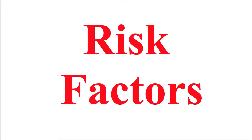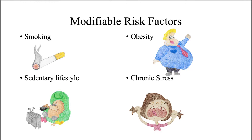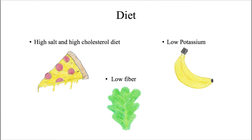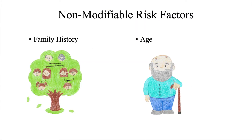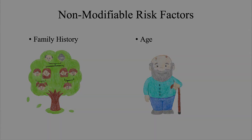Modifiable risk factors include smoking, sedentary lifestyle, obesity, chronic stress, and diet. More specifically, diets that are high in sodium and cholesterol or low in fiber and potassium have been shown to increase risk for hypertension. Non-modifiable risk factors include family history and age-related changes in blood pressure.